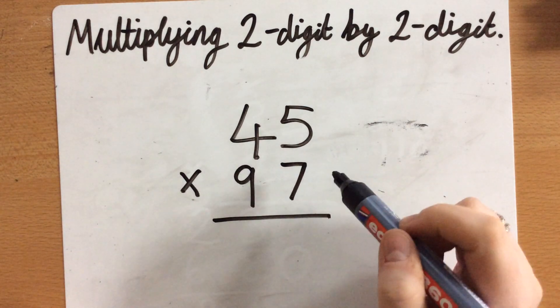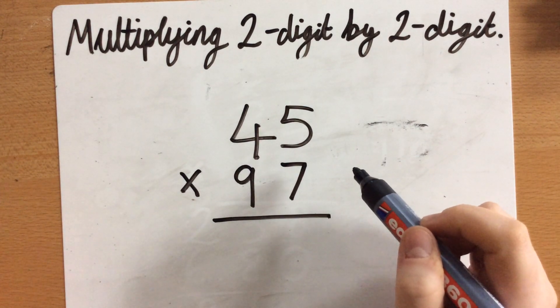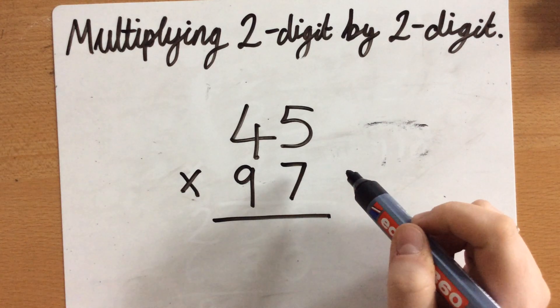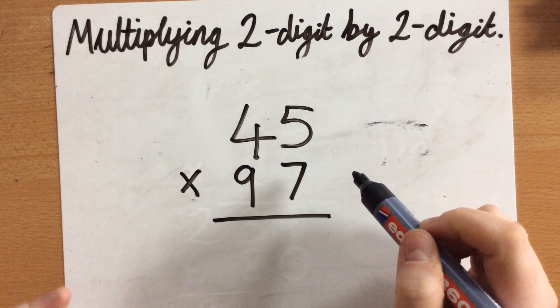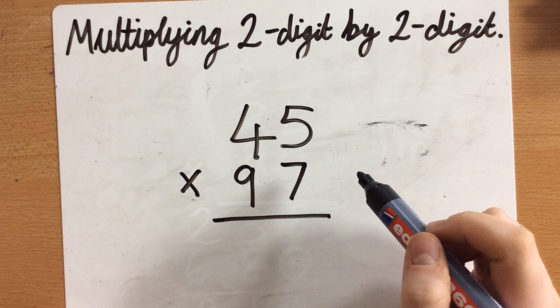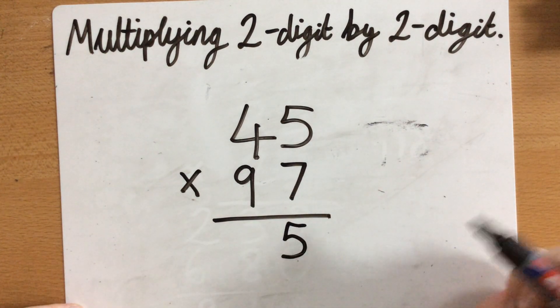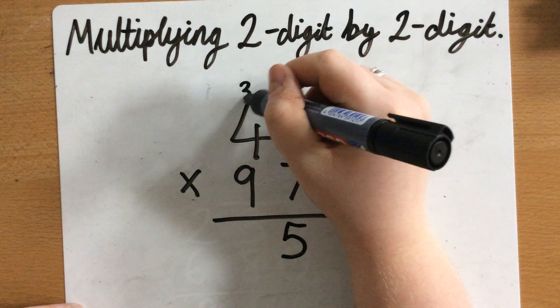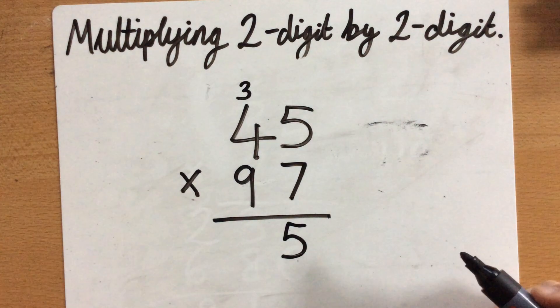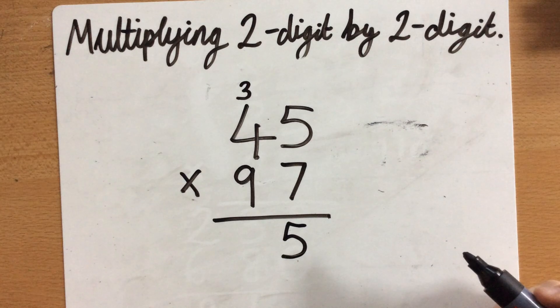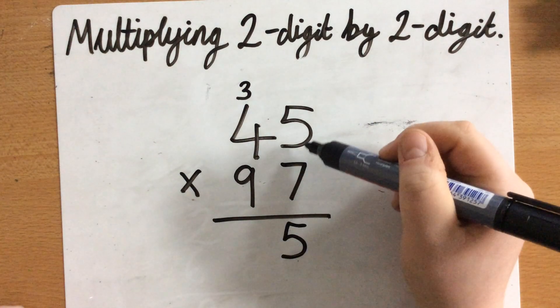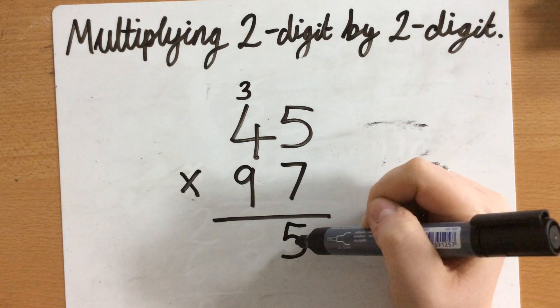So, 7 times 5. Well, I know 5 times 5 is 25, so 5 times 6 is 30, so 5 times 7 is 35. I'm not going to keep starting from the beginning all the time. So 7 times 5 is 35. The 5 goes here, and the 3 for 35 gets added on to the next column that I'm going to work on, so I don't forget to add it on.